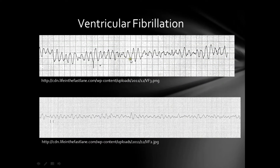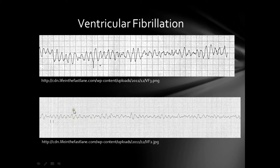On the first ECG here, we can see a typical coarse ventricular fibrillation: chaotic irregular deflections of varying amplitudes with no obvious P waves, QRS complexes, or T waves. With the second ECG taken from lead 2, you can see fine ventricular fibrillation — the same description as the coarse one, but simply with shorter amplitudes.